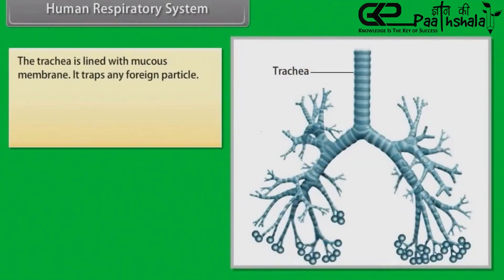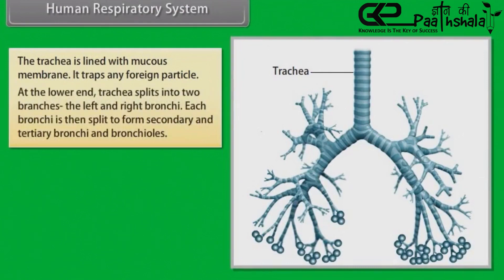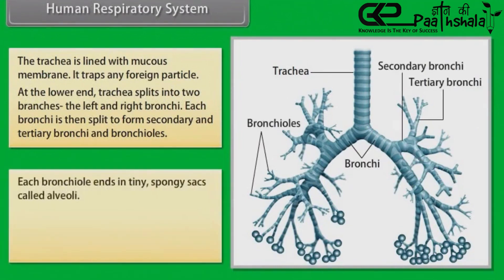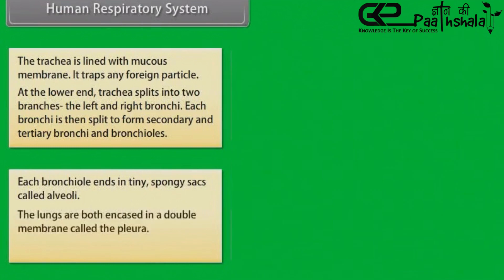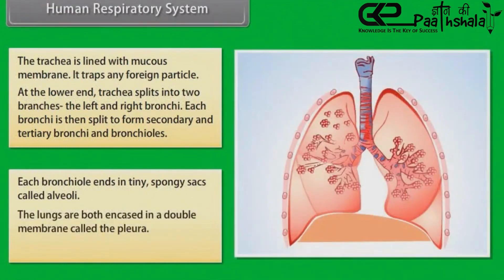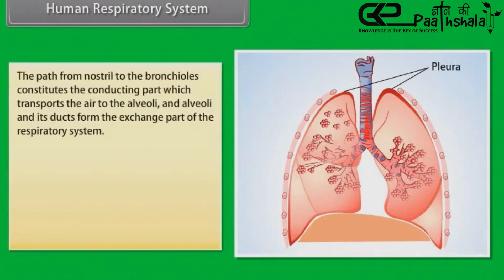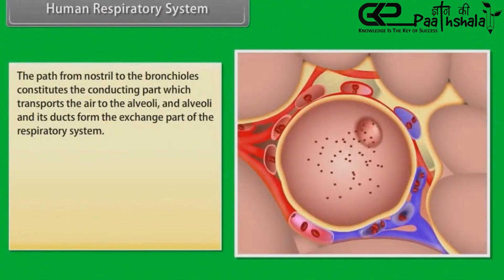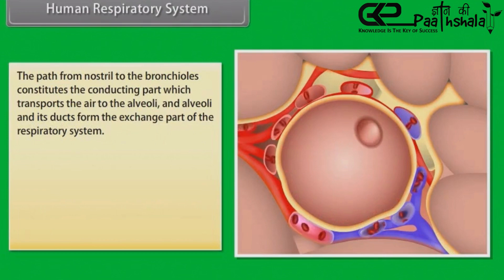A thin flap of tissue called epiglottis prevents the entry of food into the trachea during swallowing. The trachea is lined with mucous membrane, which traps any foreign particles. At the lower end, the trachea splits into two branches, the left and right bronchi. Each bronchus then splits to form secondary and tertiary bronchi and bronchioles. Each bronchiole ends in tiny spongy sacs called alveoli. The lungs are encased in a double membrane called the pleura, which protects and cushions the lungs. The path from nostril to the bronchioles constitutes the conducting part, which transports air to the alveoli, and alveoli and its ducts form the exchange part of the respiratory system.